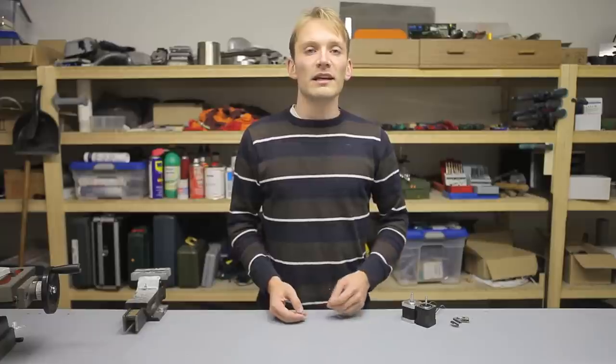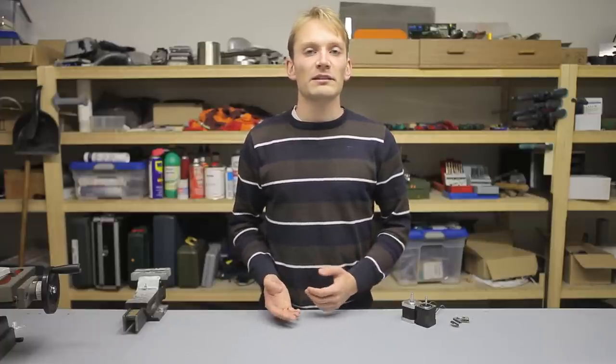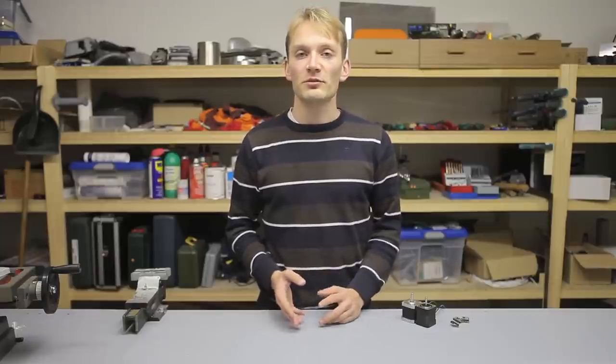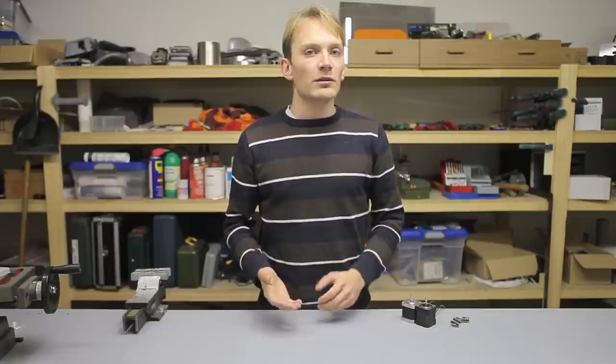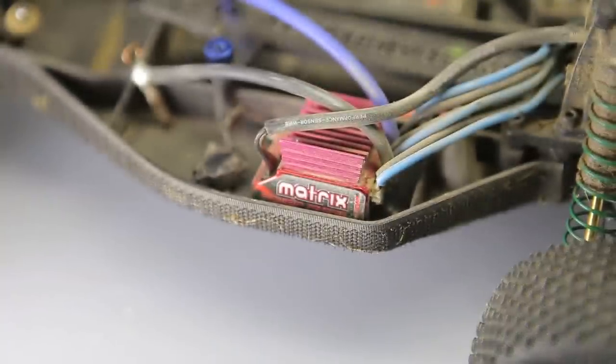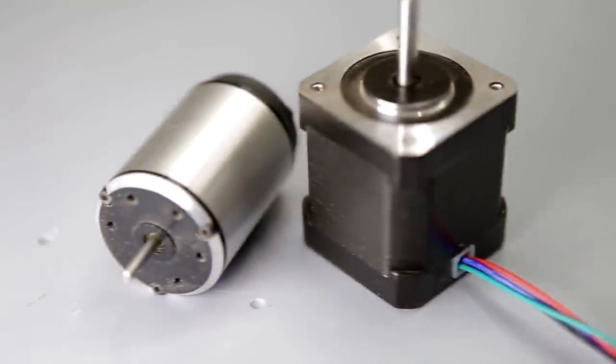Now, if the coils get energized and de-energized in the right sequence, that one spot the motor wants to rest in starts moving and the rotor starts turning to align with that spot again. Regular brushless DC motors have a layout and accompanying electronics that are geared towards efficiency and often towards higher speeds, while steppers are optimized for high torque and accurate positioning.